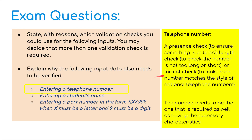For the telephone number: we would include a presence check to make sure somebody has actually entered some data. A length check would be useful to ensure the right amount of numbers has been entered. And possibly a format check — for international numbers, for example, we might want to include the plus sign or two zeros at the front of the telephone number. The number also needs to match the required format and contain the necessary characters.